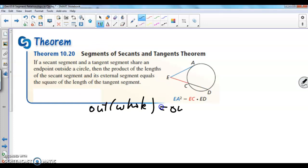Okay, I'm going to use that to explain this last example. Okay, so out times whole is equal to out times whole. So, if this is the tangent, it means that the outer portion is just the same as the whole tangent segment. That's why you see here, EA to the second power. Well, here, in the other secant segment, the external portion is EC, and then the whole secant segment is described by ED. There you go. So, how do you use that in an example?